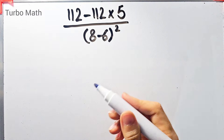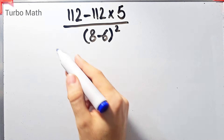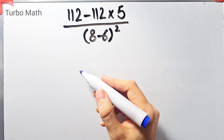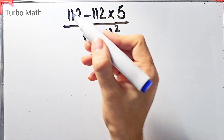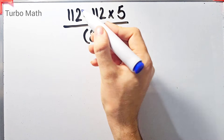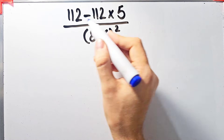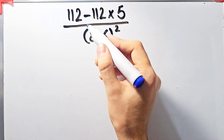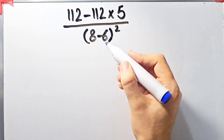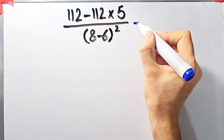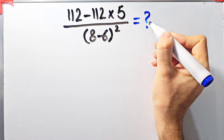Hi friends, welcome to Turbo Mass channel. Many people when they see this question don't know which operation to do first, so they often make a mistake. The problem is: 112 minus 112 times 5, then divided by open parentheses 8 minus 6 close parentheses, all to the power of 2. What is the answer?